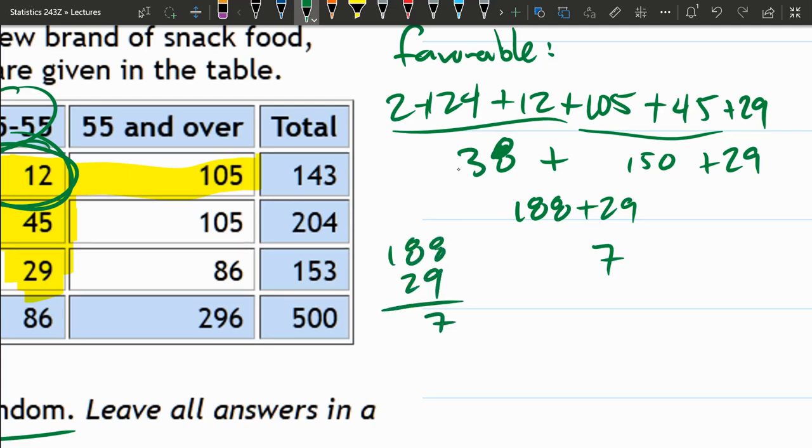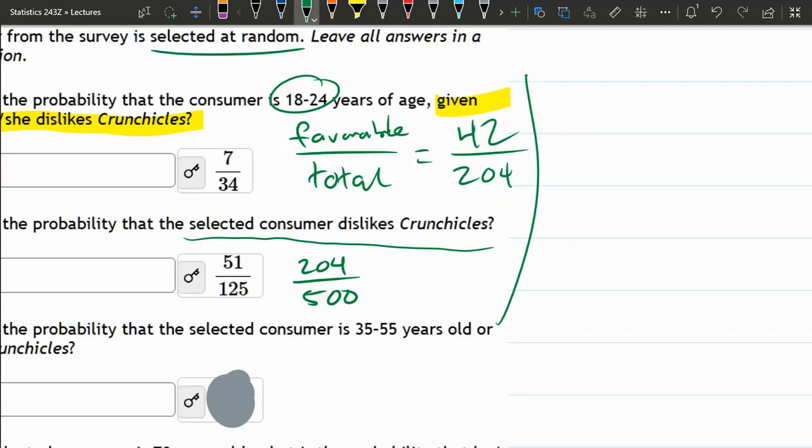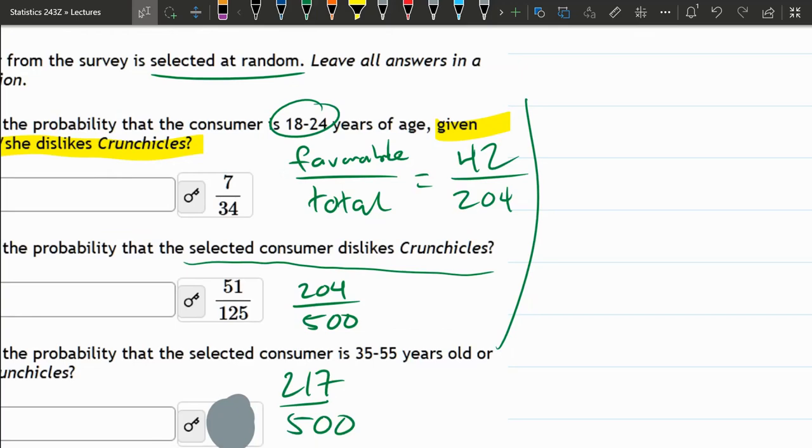188 plus 29 is a lot. So I get 7, carry my 1, 8. Leave that 1 there. 2, 11. Carry my 1. 1 plus 1 is 2. 2, 17. That's the favorable. 217 over 500.